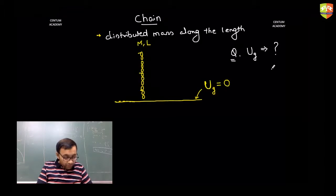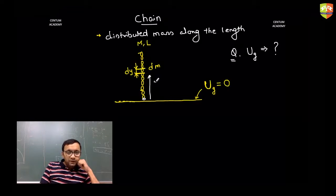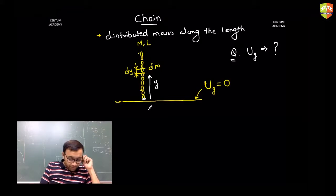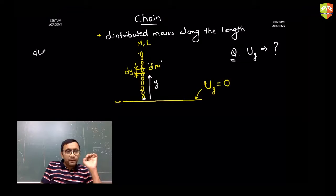You can assume the chain is just touching the ground. The hint is to take a small mass. Let's take this mass as dm, with thickness dy, located at a height y. The potential energy of dm is written as dU = dm·g·y, since dm is a point mass with a fixed location.